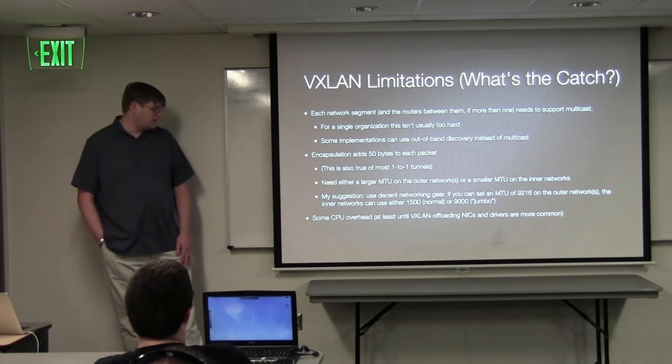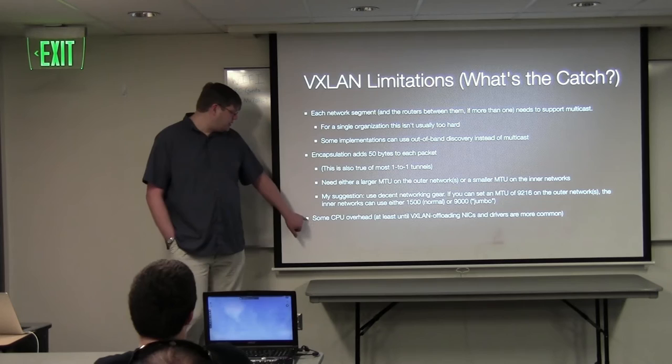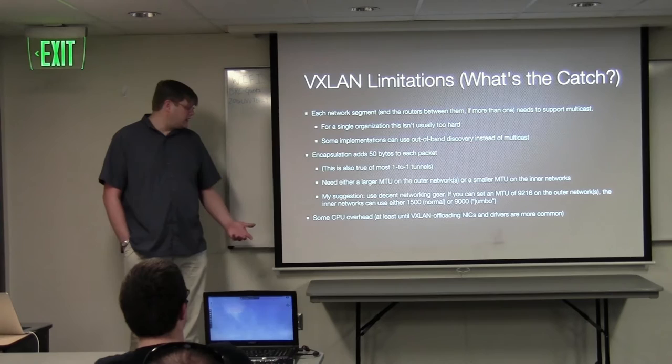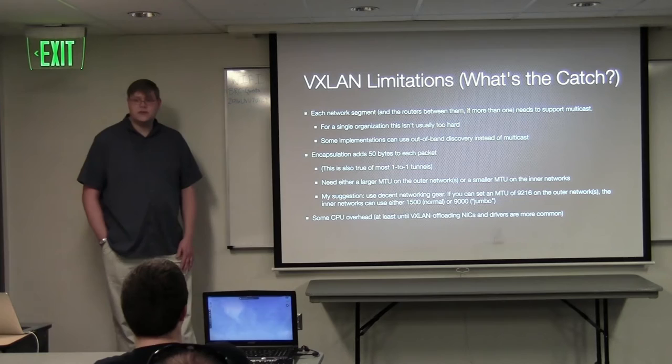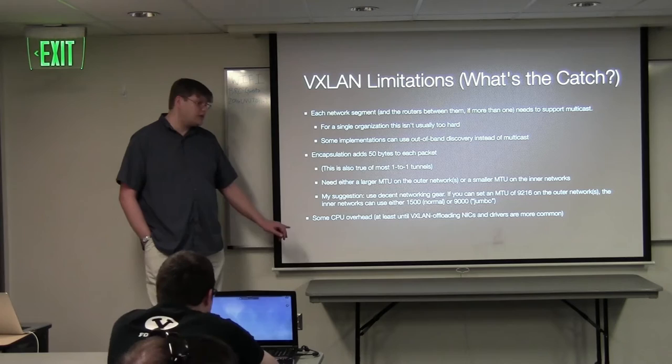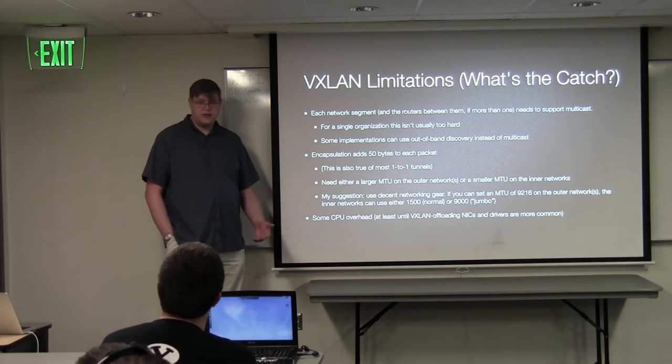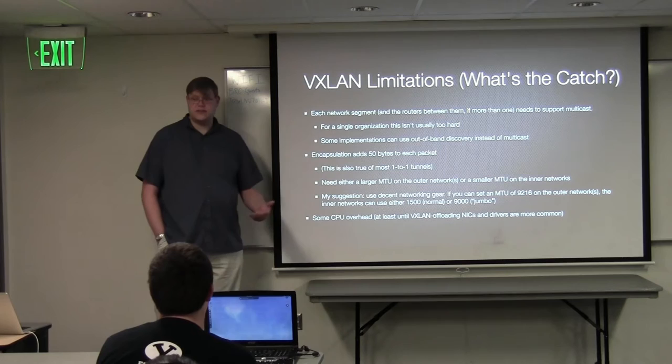If you don't have jumbo frames, 1500 works great too. There's some CPU overhead from encapsulation — you're manipulating the packet outside of the network hardware. But in my experience I've been able to saturate 10-gig links with VXLAN traffic without difficulty. There is hardware starting to support VXLAN offload, like TCP checksum offload to the NIC. Mellanox and some others have NICs that will do VXLAN encapsulation for you so the CPU doesn't even need to be involved.